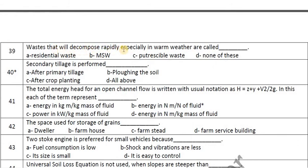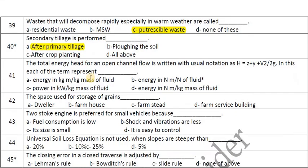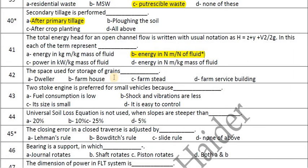Wastes that decompose rapidly, especially in warm weather, are called putrescible wastes. The total energy head for open channel flow is written as H = Z + Y + V²/2g, where each term represents energy in N·m per N of fluid. The space used for storage of grains is called farmstead. A two-stroke engine is preferred for small vehicles because it is small in size.